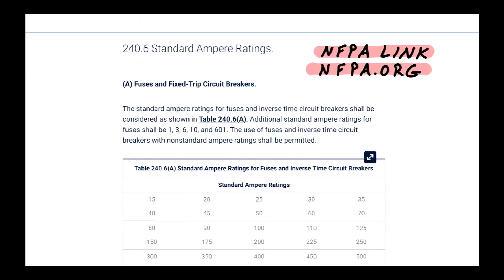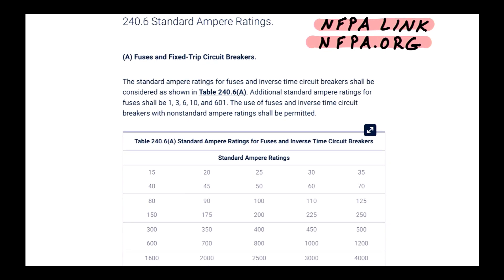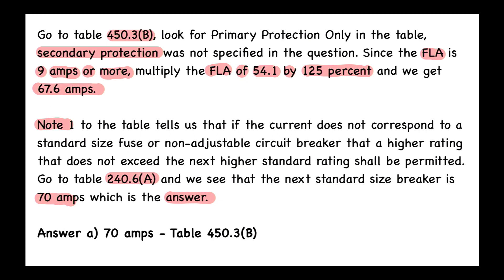Table 240.6(A) confirms that the next standard size above 67.6 amps is 70 amps. So the answer to this question is A — 70 amps. We covered transformer electrical theory, the PIE formula for both primary and secondary sides, and two key tables: Table 450.3(B) and Table 240.6(A). The reference is Table 450.3(B).